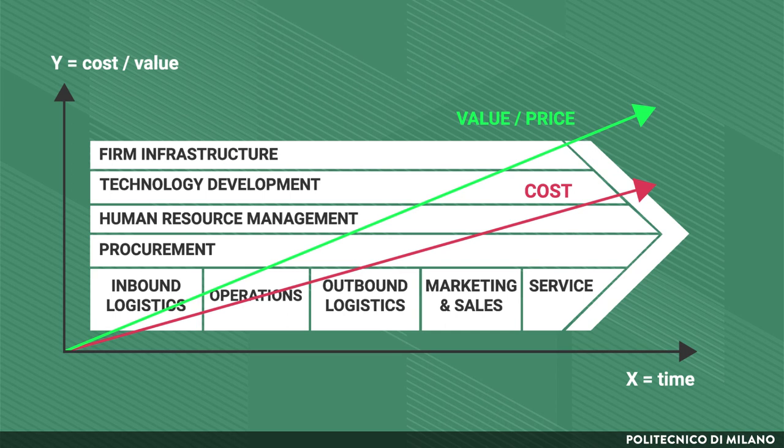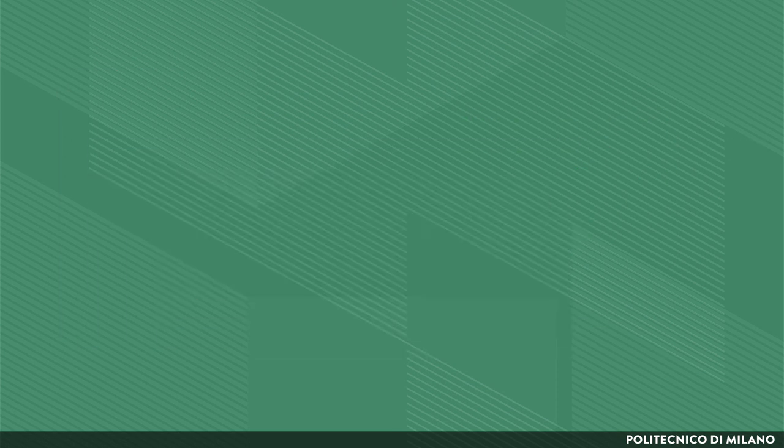At the end of the transformation of inputs into outputs, there will be an output whose value will be higher than the cost. The delta — that is, the difference between cost and value — is actually the margin. This is how performance, driven by its determinants of cost and value, builds up as we move along the company's value chain.